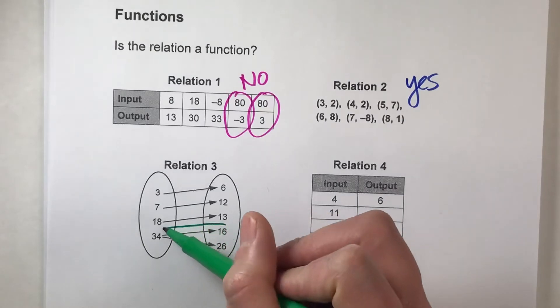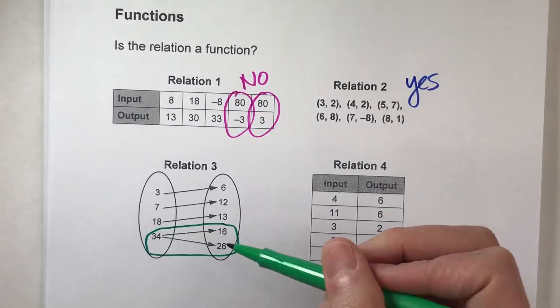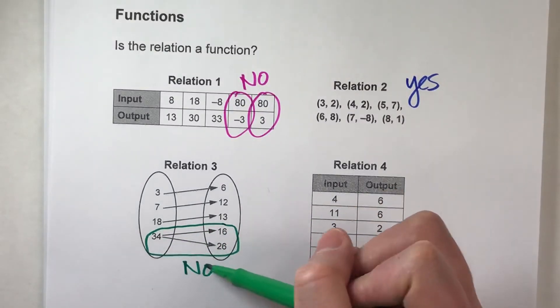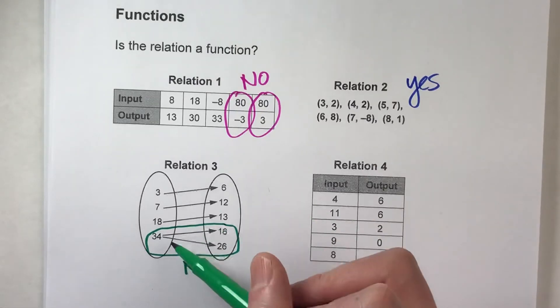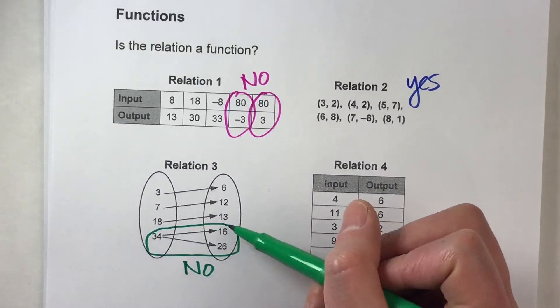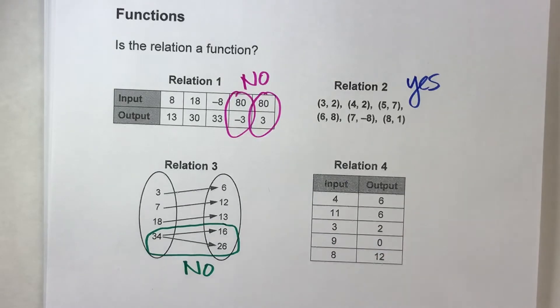So you could see right away this one right here, this makes this not a function because an input of 34 gave us two different outputs. So it's not a function.